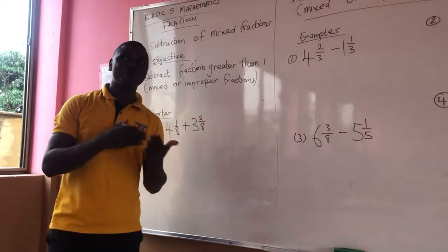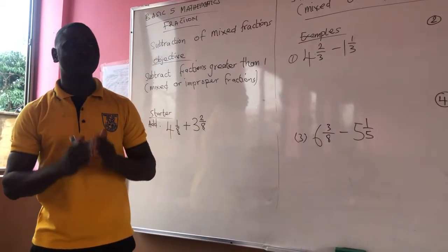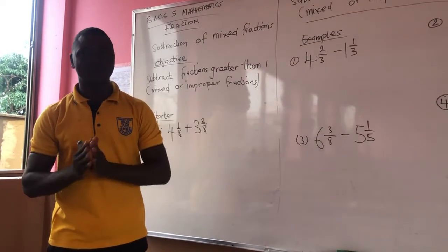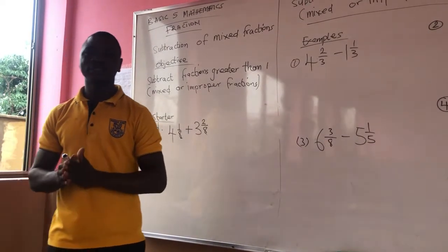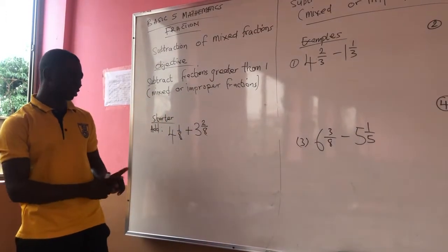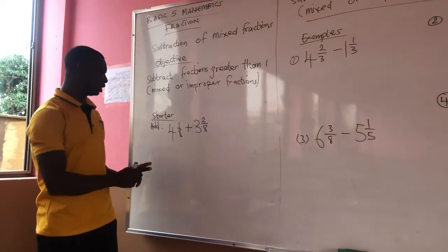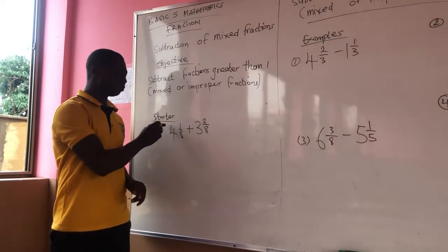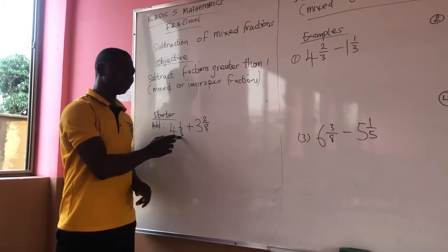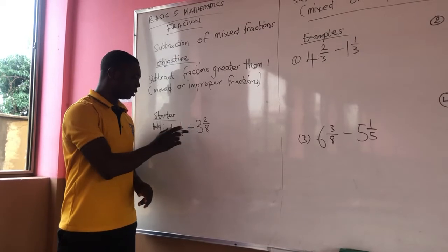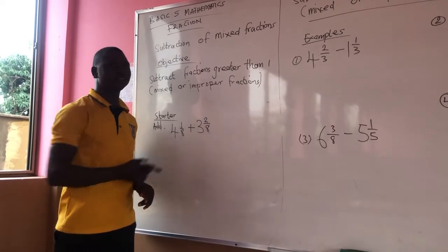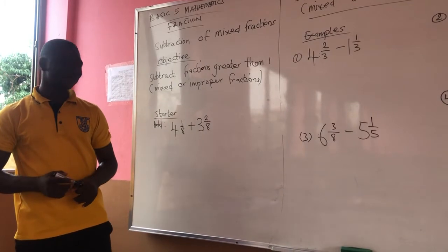Since previously we learnt addition of fractions — addition of mixed fractions — I want you to also add mixed fractions as a starter. Add 4 and 1 out of 8, plus 3 and 2 out of 8. Do it quickly.